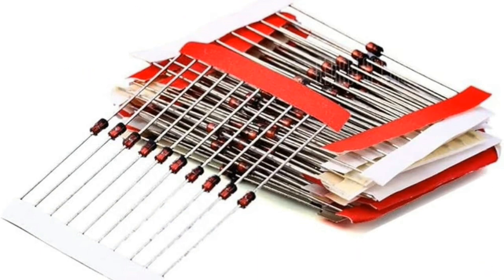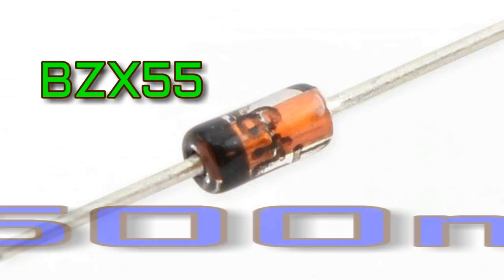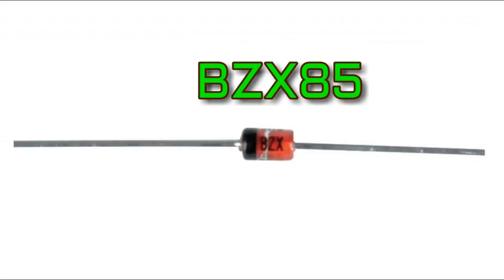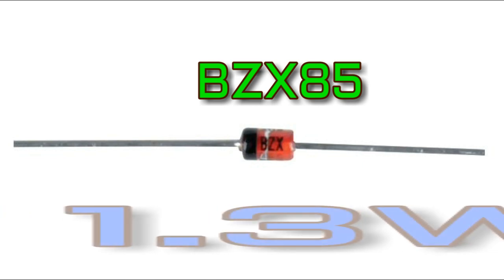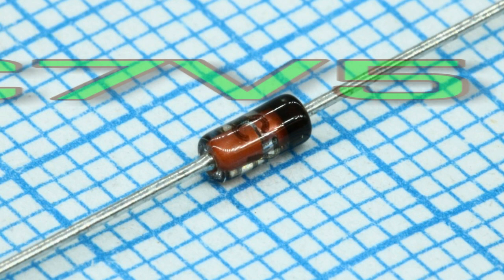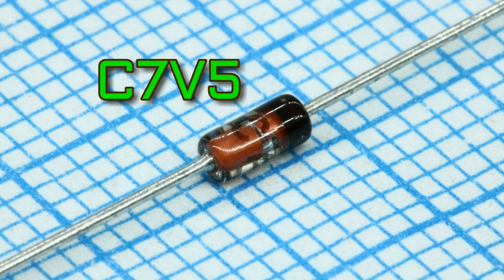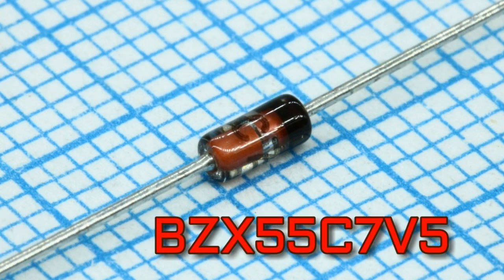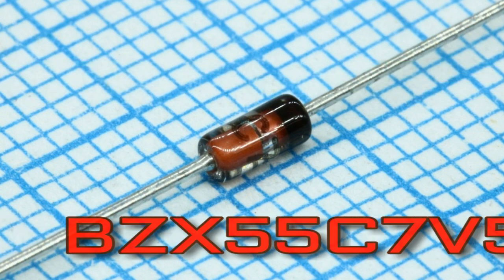A typical Zener diode for general electronic circuits is the BZX55 series Zener diode, which is 500mW, or the BZX85 series Zener diode, which is 1.3W. The Zener voltage, for example C7V5, for this diode is 7.5V, and the reference number is BZX55C7V5.